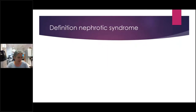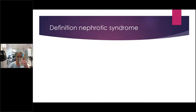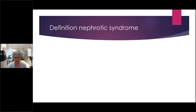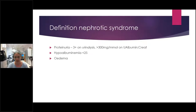Let's look at how we actually define nephrotic syndrome. Take a quick 20 seconds to think: what is nephrotic syndrome? What are the three things we need to define it? The obvious one that brings people to a GP or doctor is oedema — someone looking puffy — and then a low albumin and proteinuria. So the definition of nephrotic syndrome is that triad.